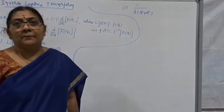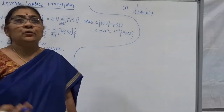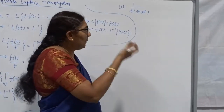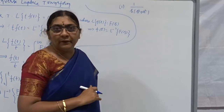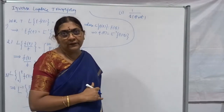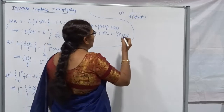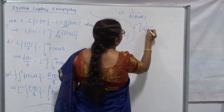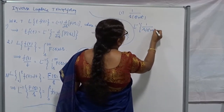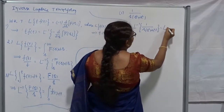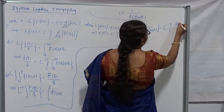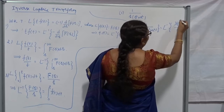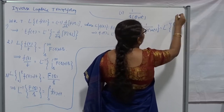There are two methods to approach this. Is it a proper fraction? Apply partial fraction decomposition, convert into simpler terms and proceed — that's one method from the last class. This can also be written as L-inverse of 1 divided by s times (s² + a²). It can also be written as L-inverse of [1/(s² + a²)] divided by s. My F(s) is 1/(s² + a²), which is the capital F(s).